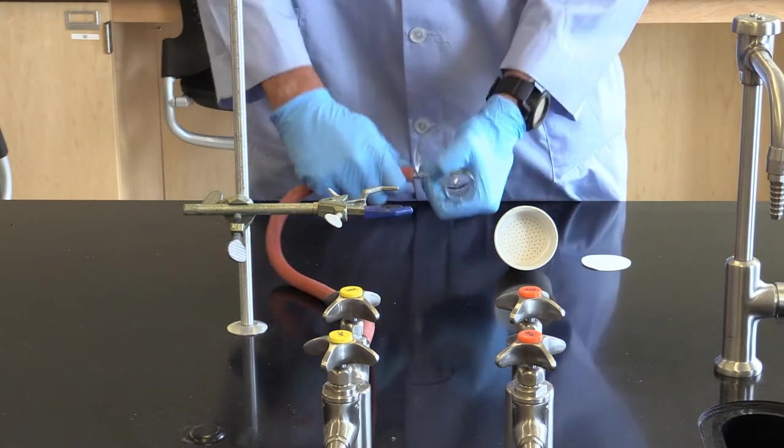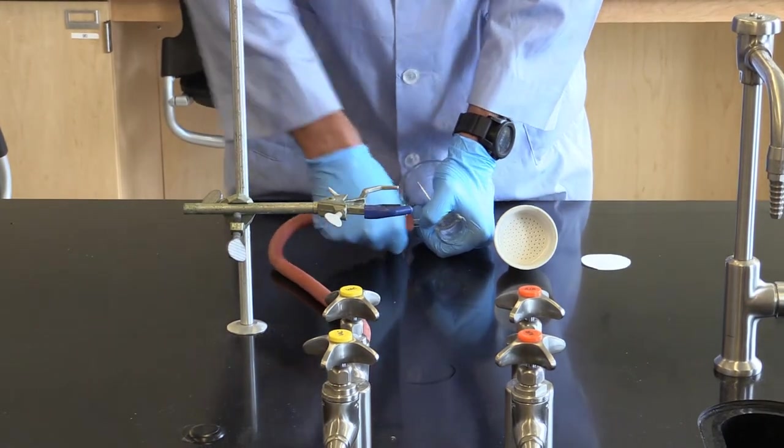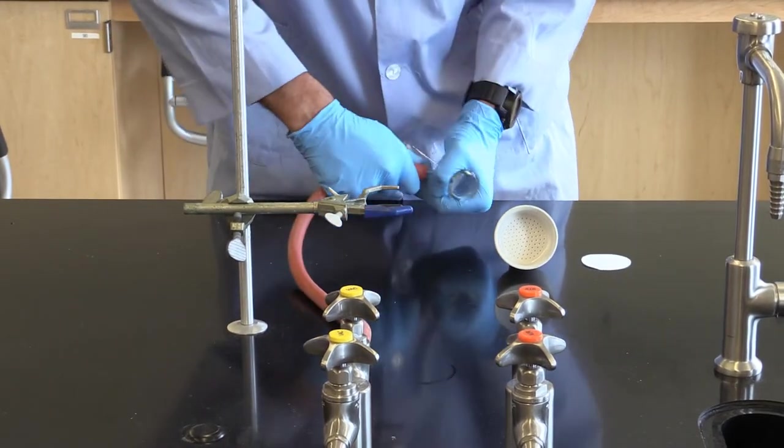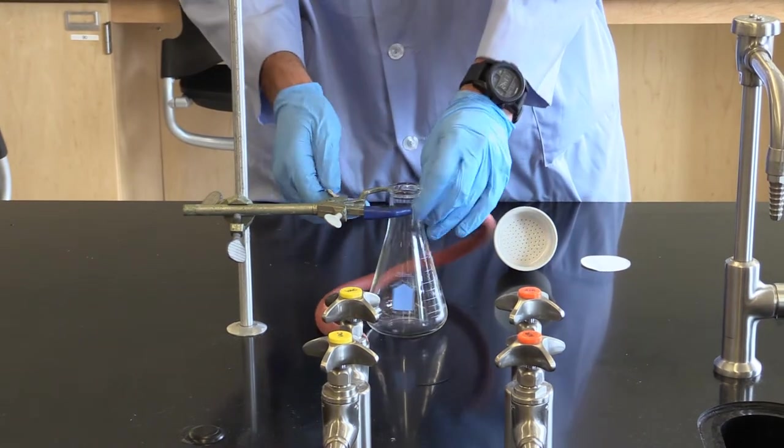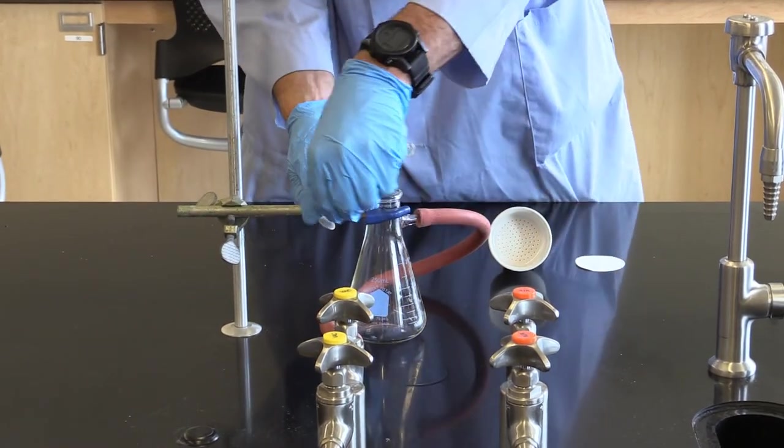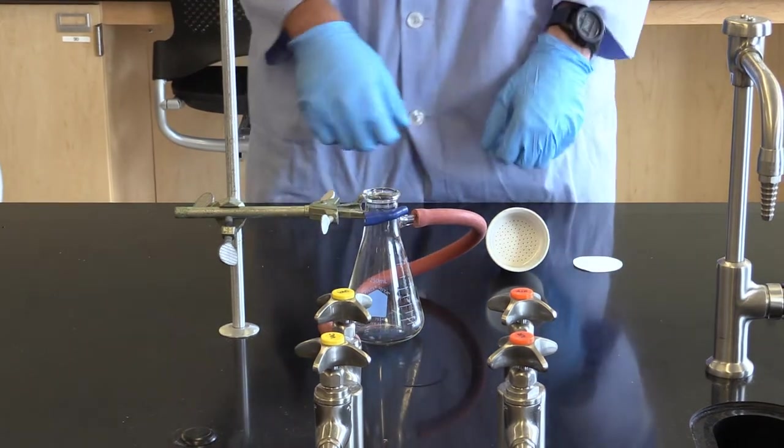First step is we're going to take the vacuum hose and attach it to the flask. We're then going to take the flask and clamp it into place.